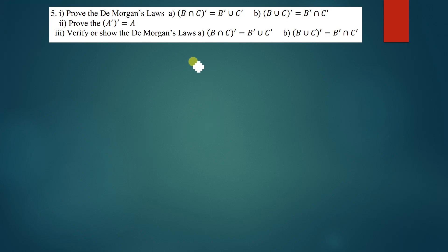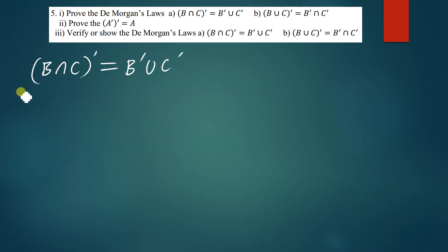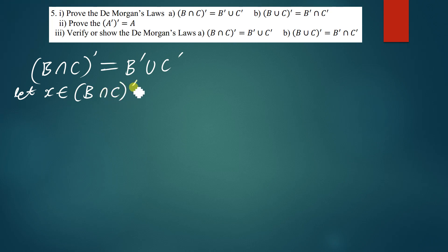So the question is: prove De Morgan's laws. The first one is that (B∩C)ᶜ is equal to Bᶜ∪Cᶜ. This is a very simple question. We are going to use an arbitrary element which is x. So I'm going to say: let x be a member of (B∩C)ᶜ.